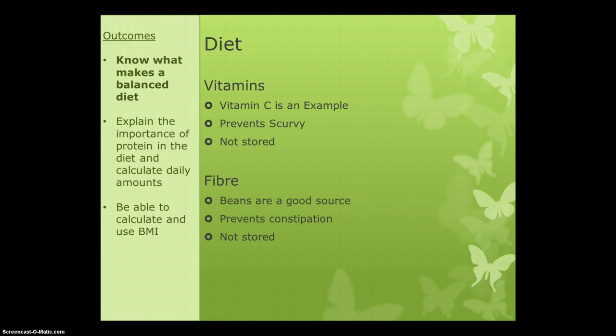The next class of chemical is fiber. Beans are a good source of this. The job of fiber is simply to prevent constipation — fiber just allows everything to keep moving through our digestive system. It's not stored since its job is to pass right through us.